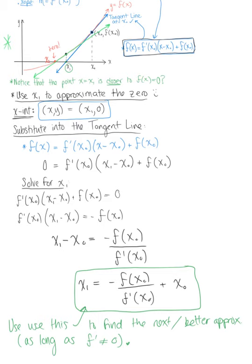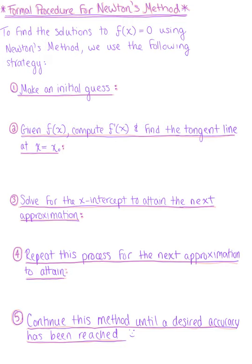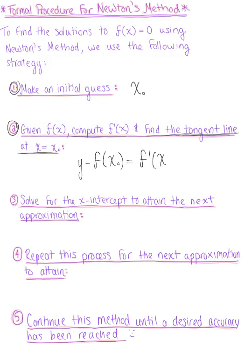Now let's explore the more formal procedure for Newton's method. To find the solutions, zeros, or roots of a curve using Newton's method, we follow this strategy. Step 1: make an initial guess, x₀ — it's just our starting point. Step 2: given f(x), compute the derivative to find the slope, then find the tangent line at that guess: y − f(x₀) = f′(x₀) · (x − x₀).